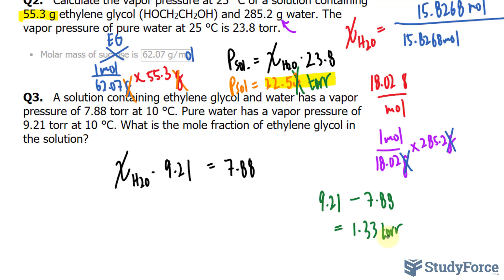Now why is that important? Because we can actually use this pressure along with Raoult's Law to find the mole fraction of the solute, which is what they're actually looking for in the question. So I have the mole fraction of the solute, ethylene glycol, I'll write down EG, multiply to 9.21, which is the pressure of the water at 10 degrees, is equal to 1.33. That right there represents the change in pressure.